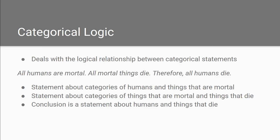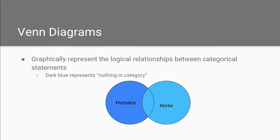This is where categorical logic comes into play — it deals with the logical relationships between categorical statements. We have a statement about categories of humans and things that are mortal, a statement about things that are mortal and things that die, and a conclusion about humans and things that die. We can graphically represent these relationships using Venn diagrams. I've drawn a Venn diagram where dark blue represents nothing in category. We see that humans are in one circle, mortal in another, and the intersection says that humans are mortal.